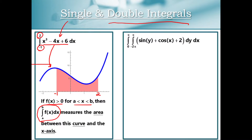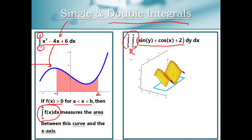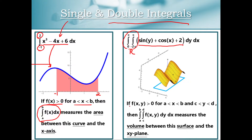A double integral will act very much the same. But now our integrand is going to be a surface, and our limits of integration describe some region on the x-y plane. In this case, I have a rectangular region on the x-y plane. And because I'm lucky enough to have a surface that is always positive over our interval, our double integral is going to measure the volume between our surface and this region on the x-y plane.